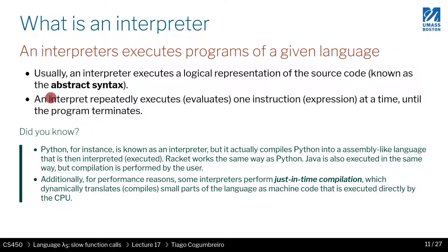The basic idea of an interpreter is that — if you think about it in terms of an imperative language — you have basically a loop going through all the instructions of your code. If you have something functional, you will have a recursive function that is recursively going through all the instructions of your code. It's basically the same idea, whether you think about execution in terms of loops or recursion.